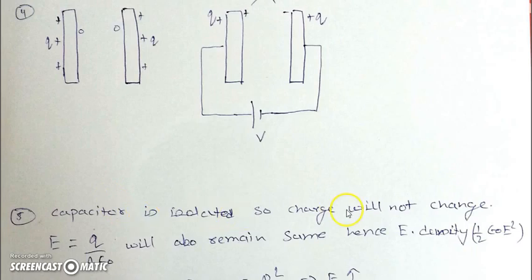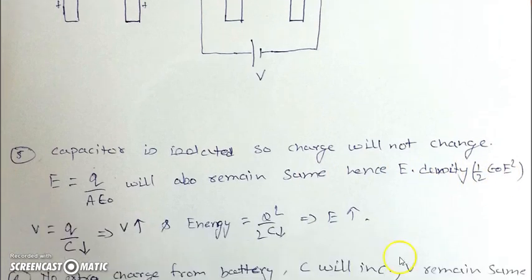The capacitor is isolated, so charge will not change. Field, which is q by a or sigma by epsilon naught, will also remain the same. Energy density will also remain the same, whereas the remaining two parameters...